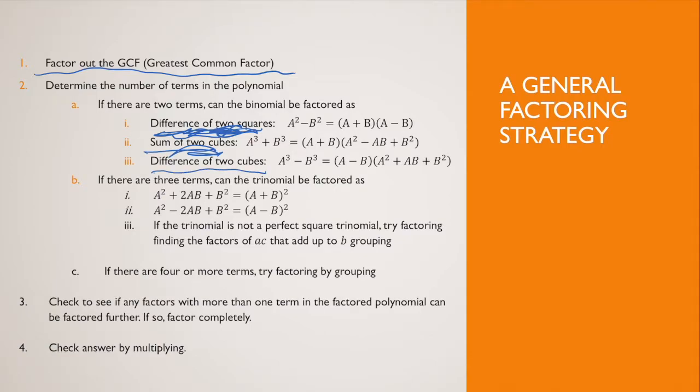If there are three terms, the trinomial can be factored by finding the factors of AC that add to B. That's what I would recommend. If there are four or more terms, you can try and factor by grouping.